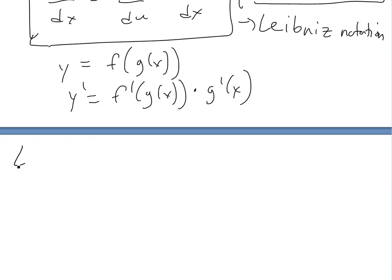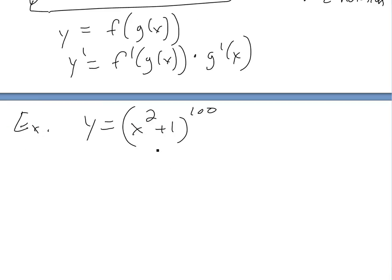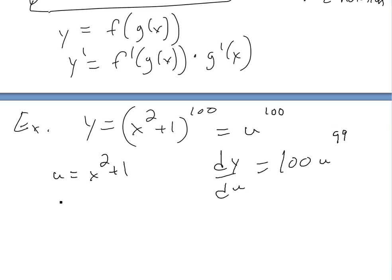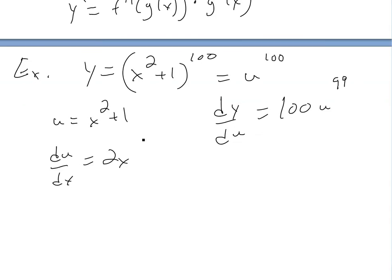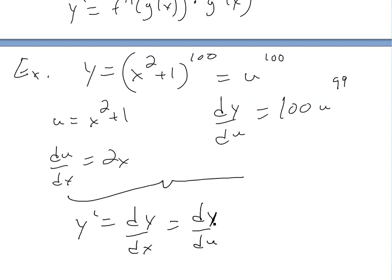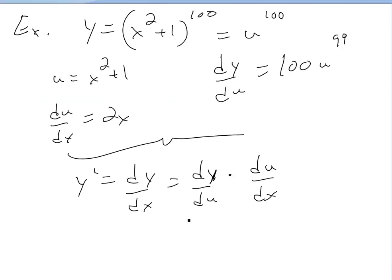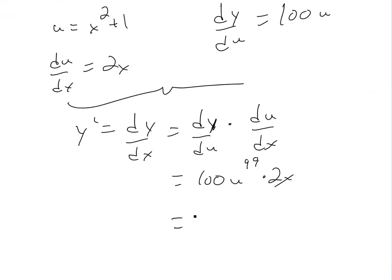Getting back to our original example where y = (x² + 1)^100: we know this equals u^100 where u = x² + 1. We have dy/du = 100u^99 by the power rule, and du/dx = 2x by the power and addition rules. So dy/dx = dy/du times du/dx = 100u^99 times 2x, where u = x² + 1, giving us 100(x²+1)^99 times 2x.